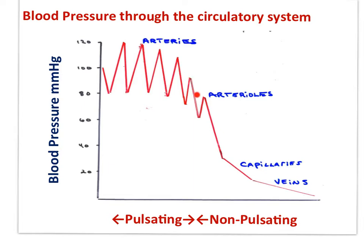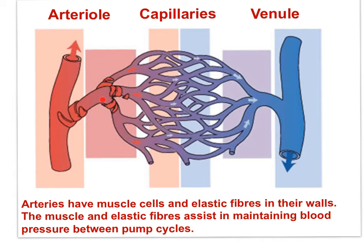Blood pressure declines as blood exits the arteries and heads into the capillaries, and in the capillaries the blood is no longer pulsing. As the arteries branch into arterioles and then into capillaries, blood velocity slows and the surface area increases. Blood arrives to the body capillaries oxygenated, but departs the capillaries deoxygenated — notice the color change in this image. In the lung capillaries, blood arrives in the arteries deoxygenated and departs in veins oxygenated.